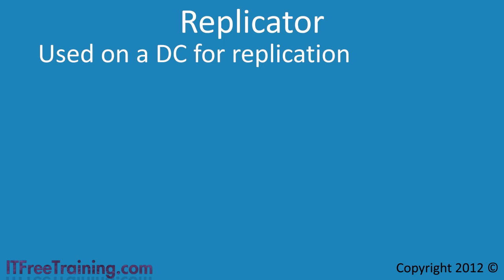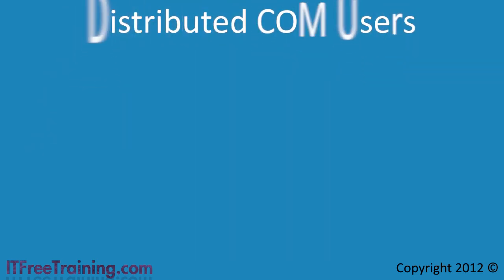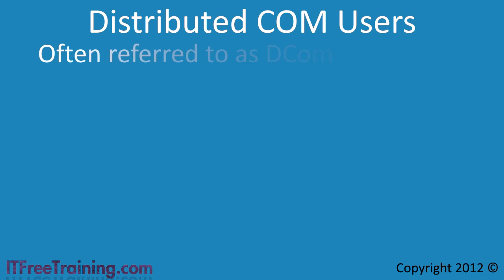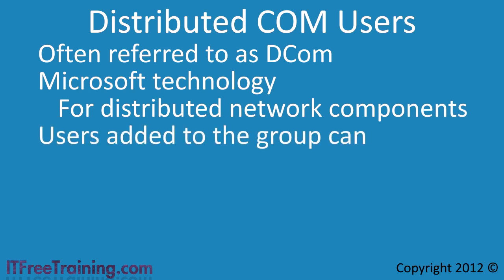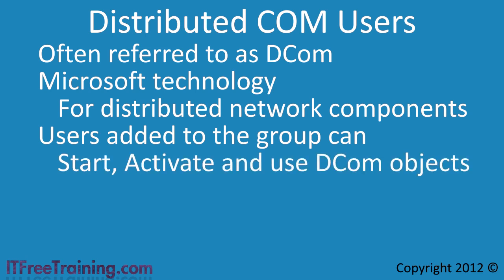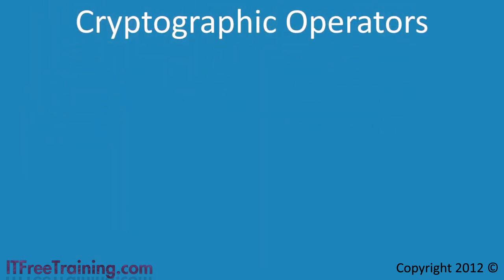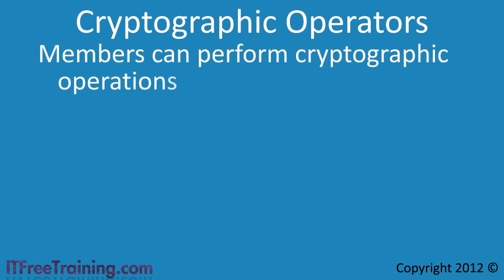Windows Vista included a DFS replication service that may have used the Replicator group, but in Windows 7 this service has been removed, so there is no apparent use for it. The next group is Distributed COM Users. Distributed Component Object Model (DCOM) is a Microsoft technology for communication between distributed network components. Members of this group can start, activate and use DCOM objects on the computer. The last group is Cryptographic Operators. Members can perform cryptographic operations and change system-level cryptographic settings. In normal day-to-day operations you should never need to add a user to this group, and it does not affect the user's ability to use encryption like IPSec or EFS.